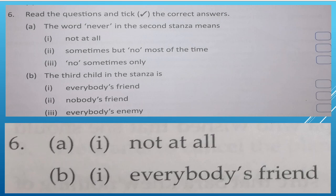What does the word 'never' in the second stanza mean? 'Never' means 'not at all.' The third child in the third stanza is everybody's friend because he shares his books, balls, and games — so everybody is his friend.